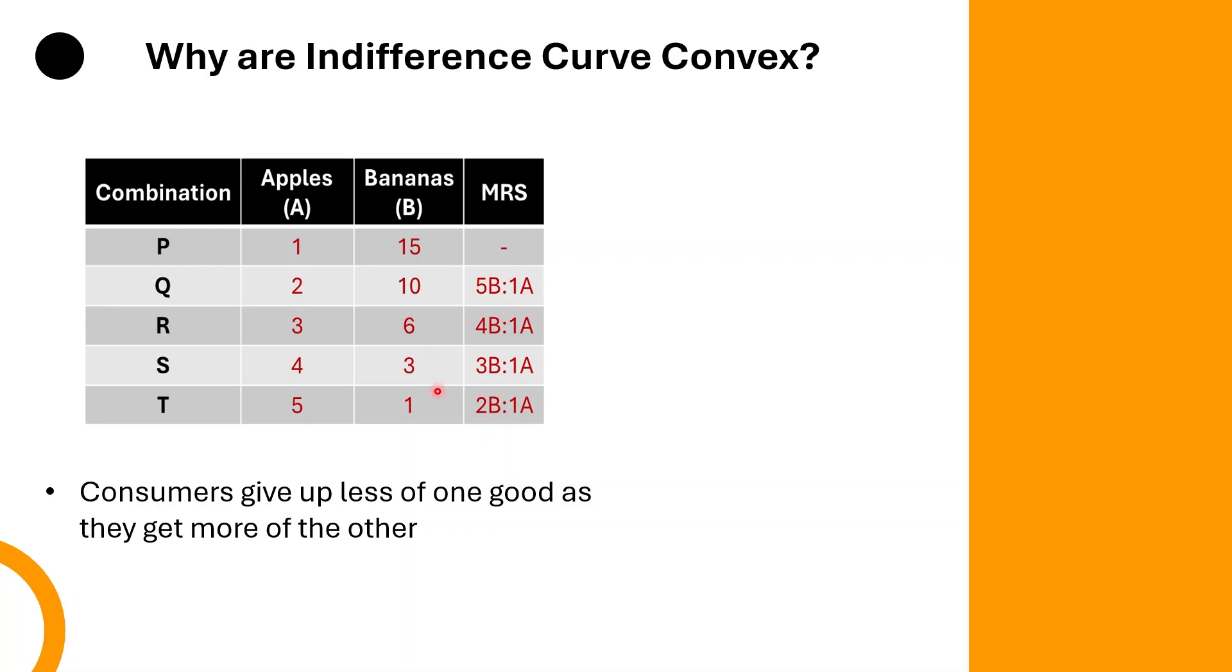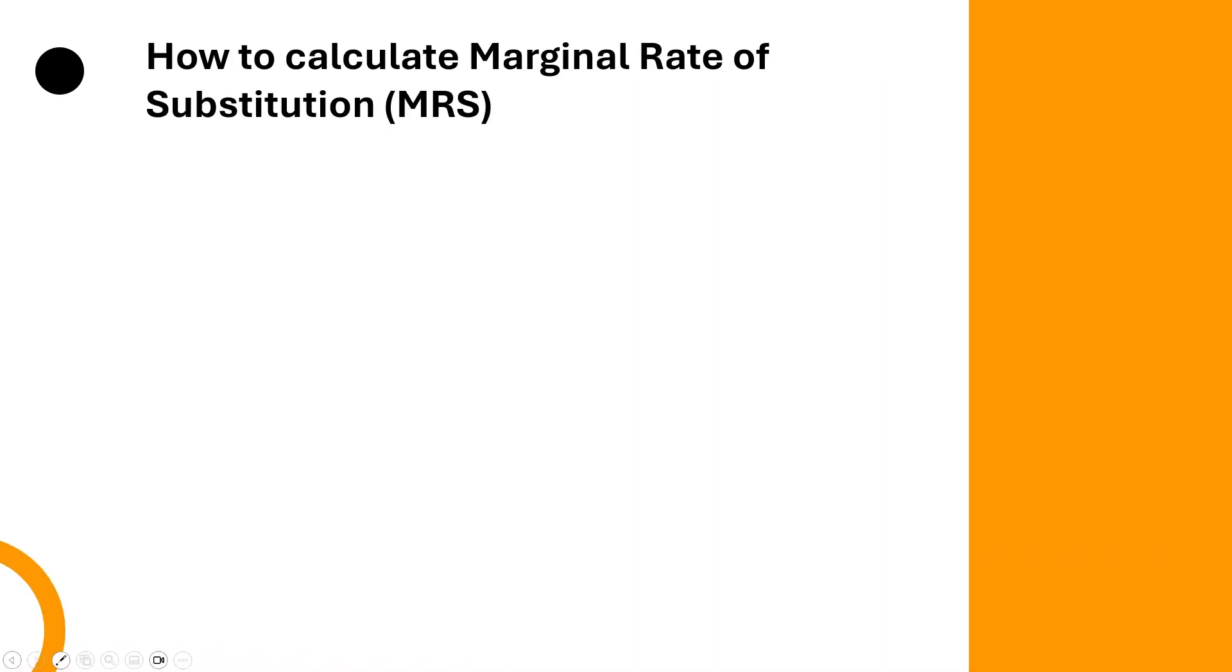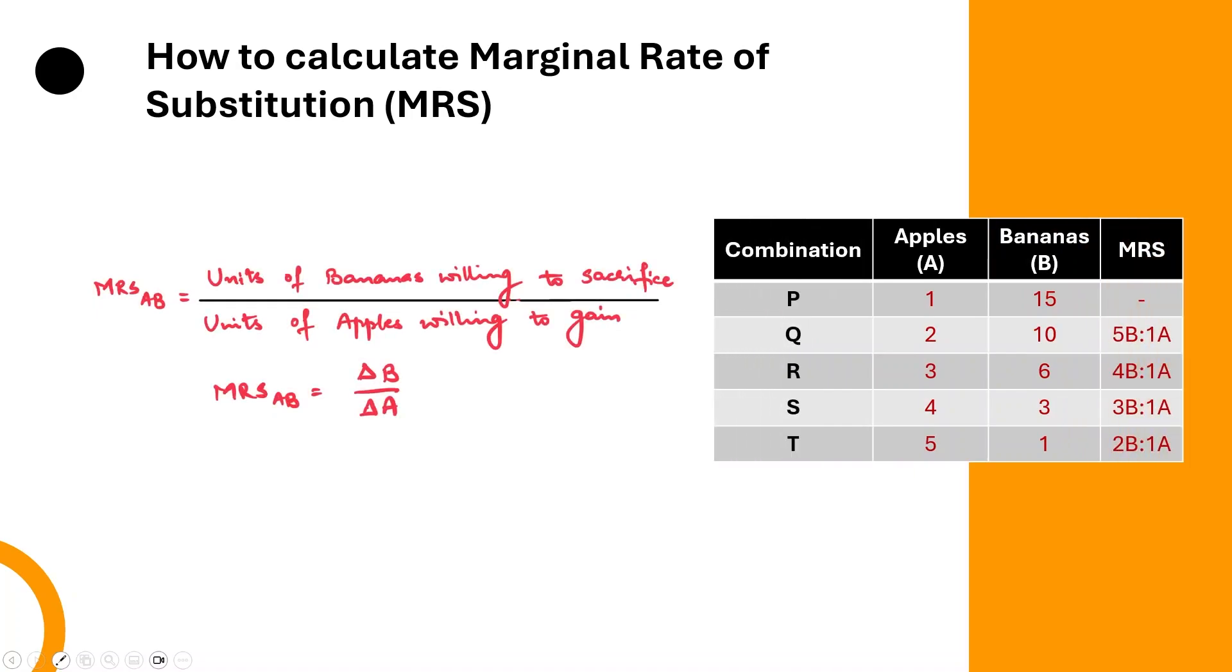So, in every new combination, the consumer, in order to gain one more apple, is letting go lesser and lesser bananas. This diminishing willingness to trade goods leads to the convex shape, illustrating how consumers make trade-offs between goods. Now, let's understand how to calculate marginal rate of substitution. Marginal rate of substitution is the rate at which a consumer is willing to give up bananas in our example for one more unit of apple.